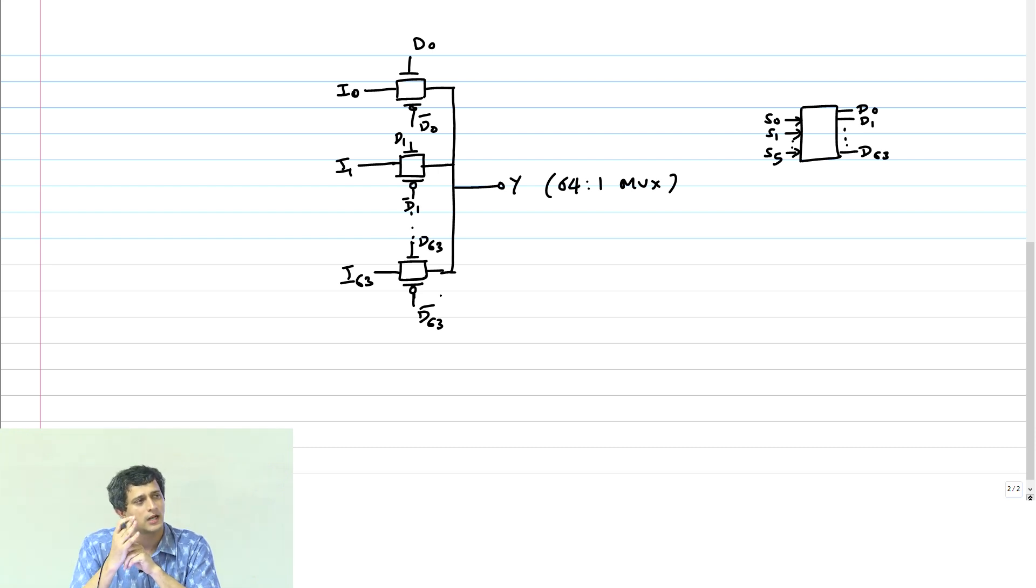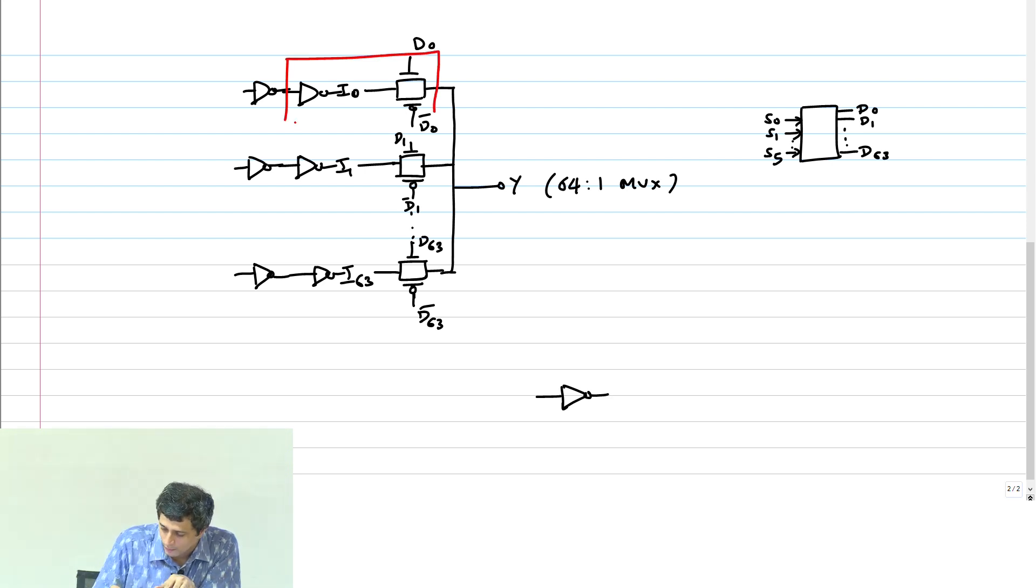Clearly you cannot answer that question because unless you tell me what is driving this gate, I cannot tell you what the drive strength of this gate is. For example, if I have an inverter here or a buffer or whatever—if you do not want inversions, then put a buffer, no problem. Then I can now answer that question because if I look at this inverter, if I look at this part of the circuit, it is going to be an inverter followed by a transmission gate.